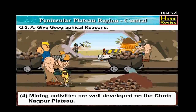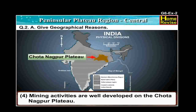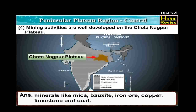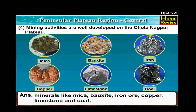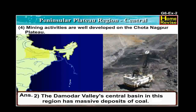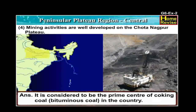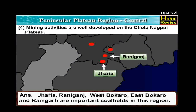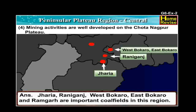Number 4: Mining activities are well developed on the Chhota Nagpur Plateau. The answer is: Mining activities are well developed on the Chhota Nagpur Plateau because it is a storehouse of minerals like mica, bauxite, iron ore, copper, limestone and coal. The Damodar Valley's central basin in this region has massive deposits of coal. It is considered to be the prime centre of coking coal, that is bituminous coal, in the country. Jhariya, Rani Ganj, West Bokaro, East Bokaro and Ramgarh are important coal fields in this region.